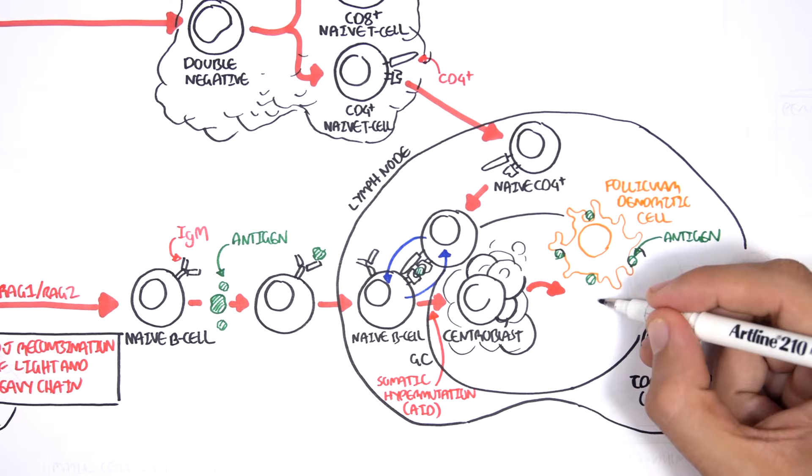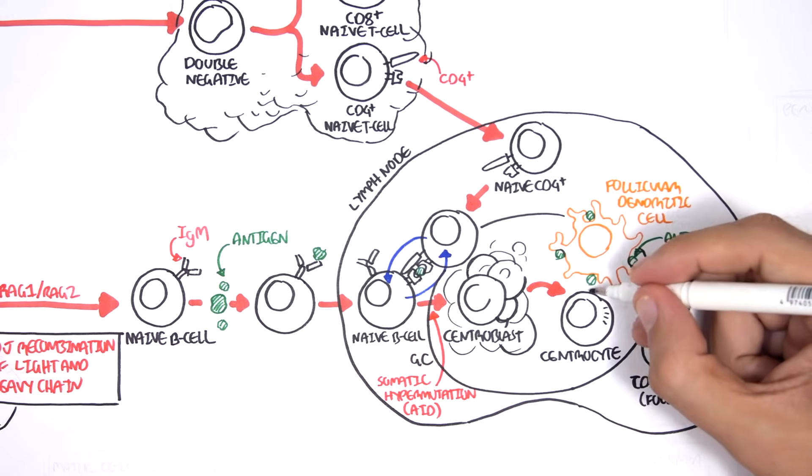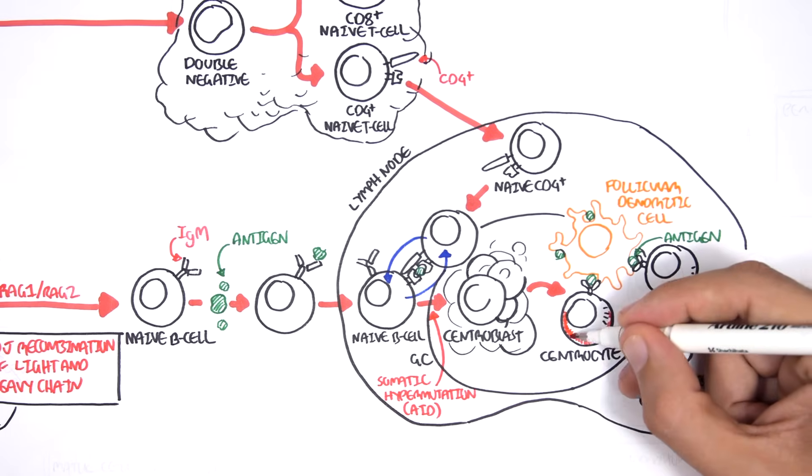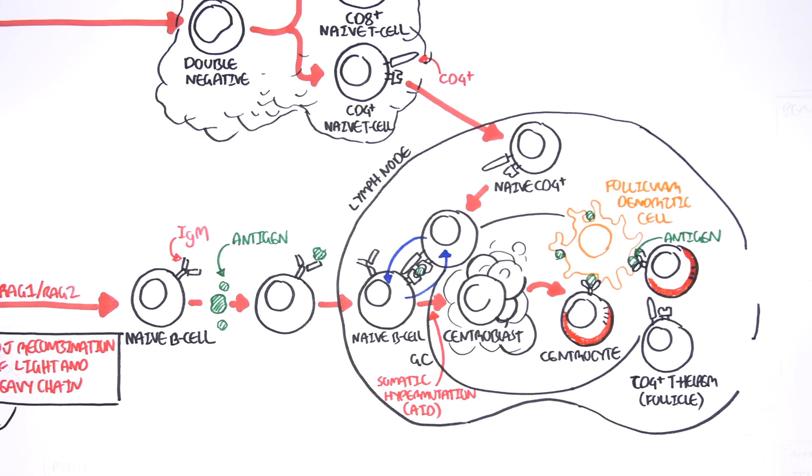When the centroblasts move from one part of the germinal center to the other, they become centrocytes. These centrocytes need cytokines in order to survive and mature. They sample antigens presented by the dendritic cells using their newly acquired specific surface IgM antibody. Unfortunately, some centrocytes will have decreased affinity to these antigens after undergoing somatic hypermutation. The ones that have decreased affinity will die through apoptosis. Fortunately, there are centrocytes that will have increased affinity following hypermutation and will easily recognize the antigen presented by the follicular dendritic cell. If these centrocytes recognize the antigen, they will engulf it and present it to the T helper follicular cell nearby.